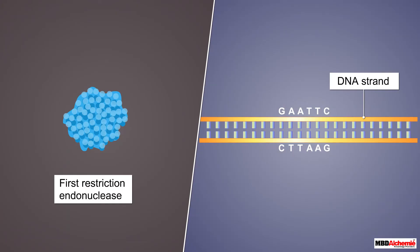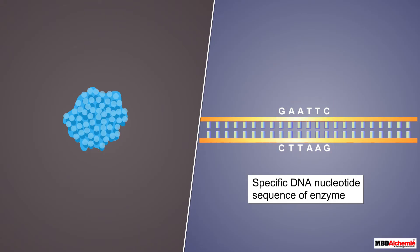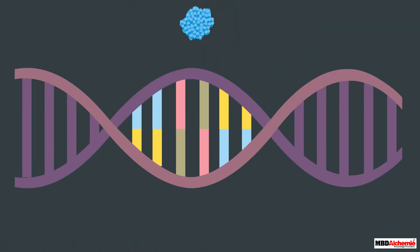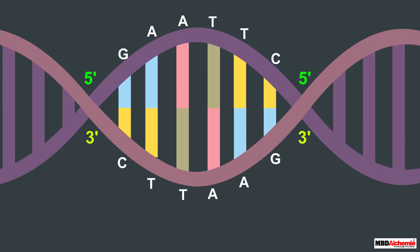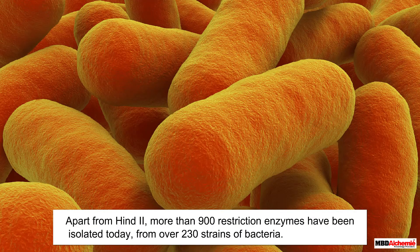The other enzyme was responsible for cutting the DNA and was named Restriction Endonuclease. It was five years later that the first Restriction Endonuclease, whose functioning was based on a specific DNA nucleotide sequence, was isolated. This enzyme, named HindII, was isolated from the bacterium Haemophilus influenzae. It was later found that HindII always cut DNA molecules at a particular point, recognizing a specific sequence of six base pairs, known as the recognition sequence for HindII. Today, more than 900 restriction enzymes have been isolated from over 230 strains of bacteria, and each recognizes different recognition sequences.